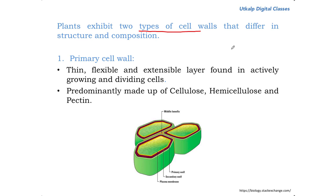Now we come to a very important topic — the types of cell walls. Each plant cell may have two types of cell wall: the primary cell wall and the secondary cell wall. The primary cell wall is a thin, flexible, and extensible layer. It is essentially found in all plant cells, but it is the only layer found in growing and dividing cells. In a growing and dividing cell, you will never find secondary cell walls.